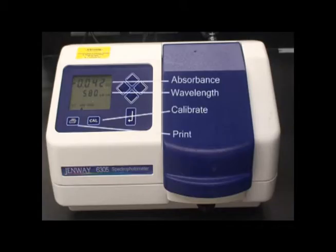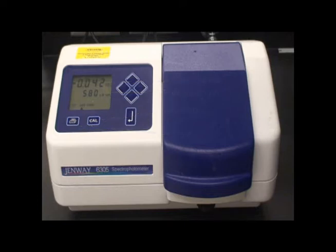Seen here are some common buttons on spectrophotometers. The wavelength of light, currently set at 580 nanometers, can be adjusted with the arrows.